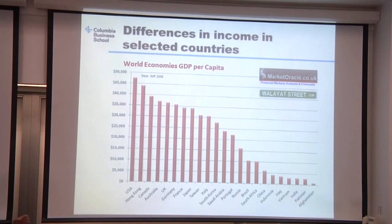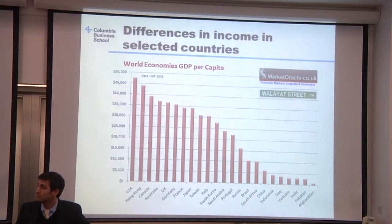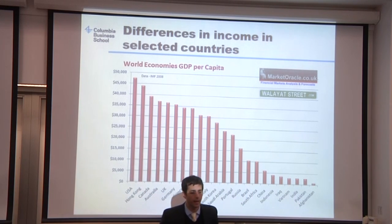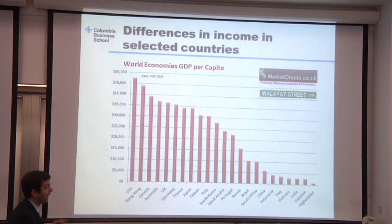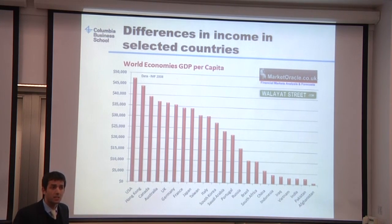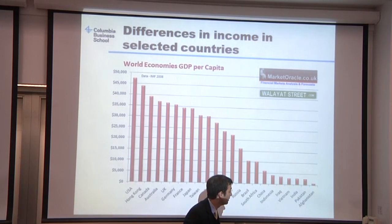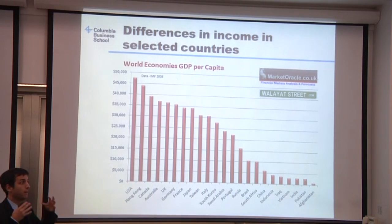Another way to see the same issue is to rank a group of selected countries according to their GDP per capita. We have the United States with a GDP per capita of $48,000, and on the other extreme, a country like Afghanistan with a GDP per capita of $1,000 — and I'm not even putting very poor African countries in this graph. That means an average citizen of the United States is 48 times richer than an average citizen of Afghanistan. That's a lot of difference.